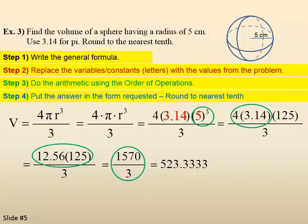Put the answer in the requested form. Round to the nearest tenth. Nothing changes because 3 is less than 5. So it's 523.3. We're talking volume, so it's centimeters cubed.